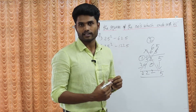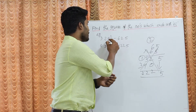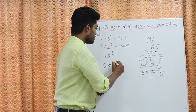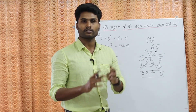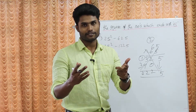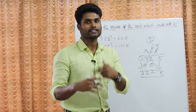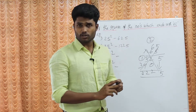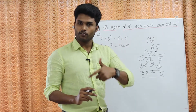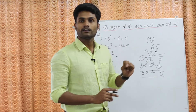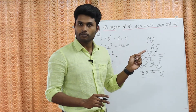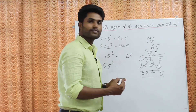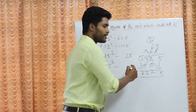For example, 25 square is 625, 35 square, 45 square, 55 square, 65 square, 75 square. Notice that the last two digits of the answer are always 25. Whether it is 5 square, 15 square, 25 square, 35 square, 45 square, 55 square — the last number is always 25. So for any number ending in 5, the last two digits of the square are always 25.